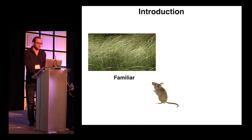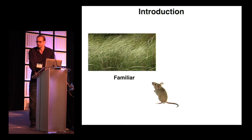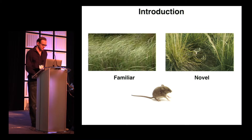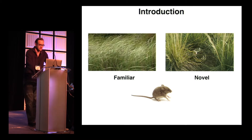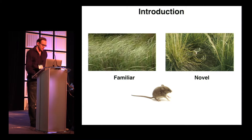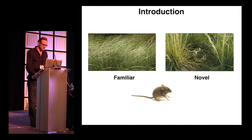In the case of a familiar stimulus, an animal has generally learned from experience what behavior is appropriate. But in the case of a novel stimulus, the animal may need to generate different behavior. Therefore, the brain might benefit from a different representation for novel and familiar stimuli in the sensory pathway. This would allow downstream areas to execute different behavior depending on whether the stimulus is familiar or novel, and potentially employ different forms of learning. We wanted to test if these representations exist, using the primary visual cortex of the mouse as a canonical prototypical sensory area.